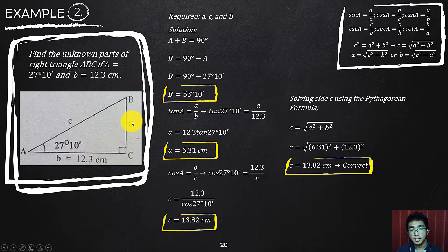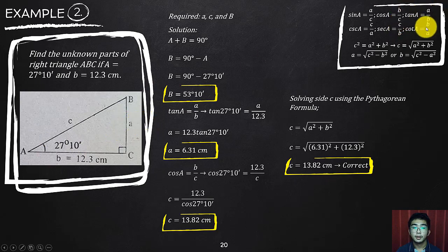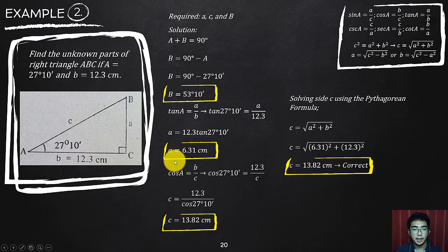For side A, we have angle A and its adjacent side B = 12.3, and we're looking for the opposite side A. That corresponds to the tangent function: tan(27°10') = a/12.3. Cross multiplying and inputting into the calculator, we get side A = 6.31 centimeters.